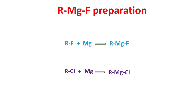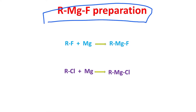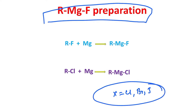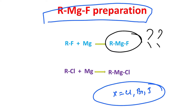The topic is RMgF preparation. The majority of you have probably never seen the way to prepare this RMgF, because whenever we say RX plus metallic magnesium in an inert solvent like ether or THF, in every case X is written as Cl, Br, or iodide — never fluorine.